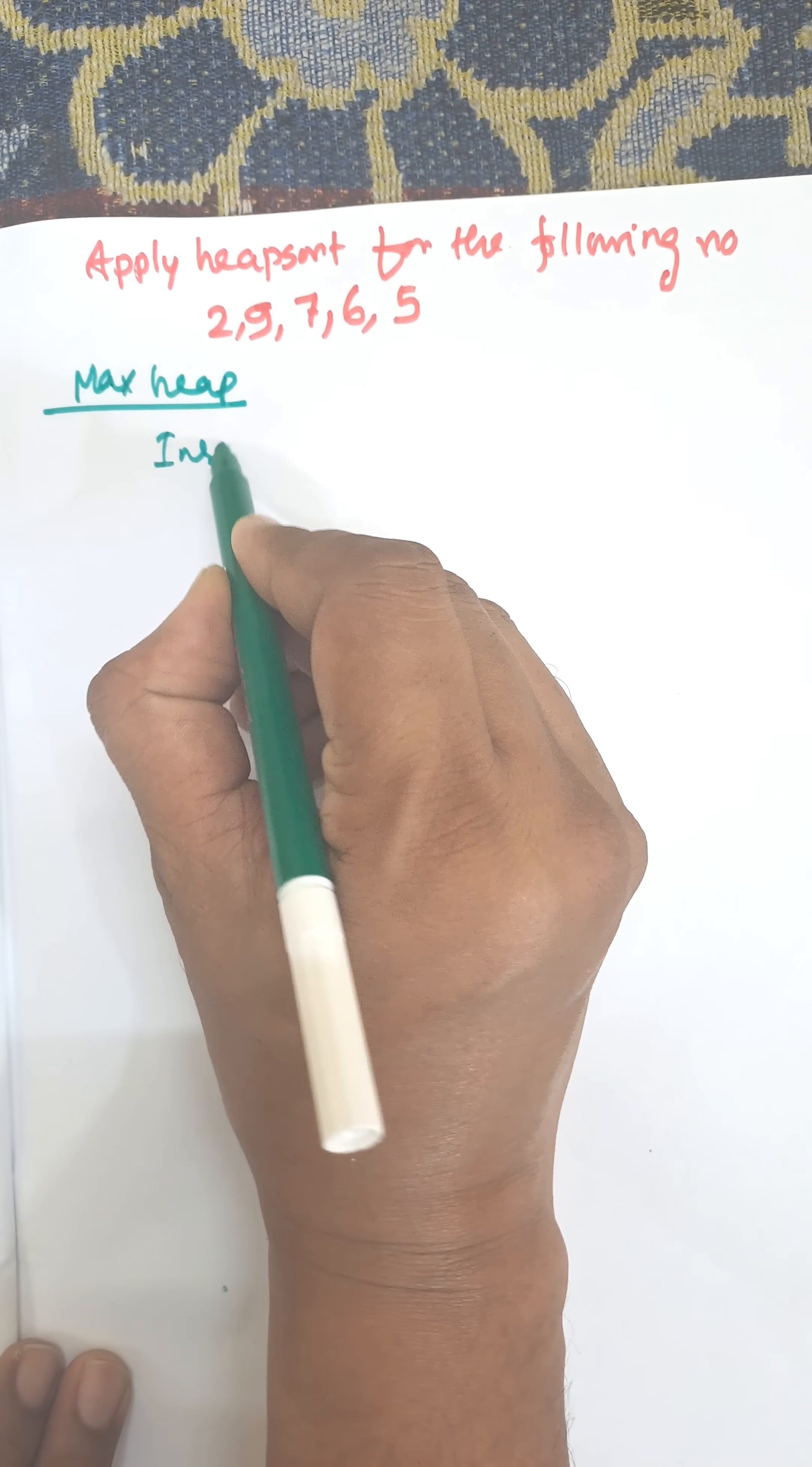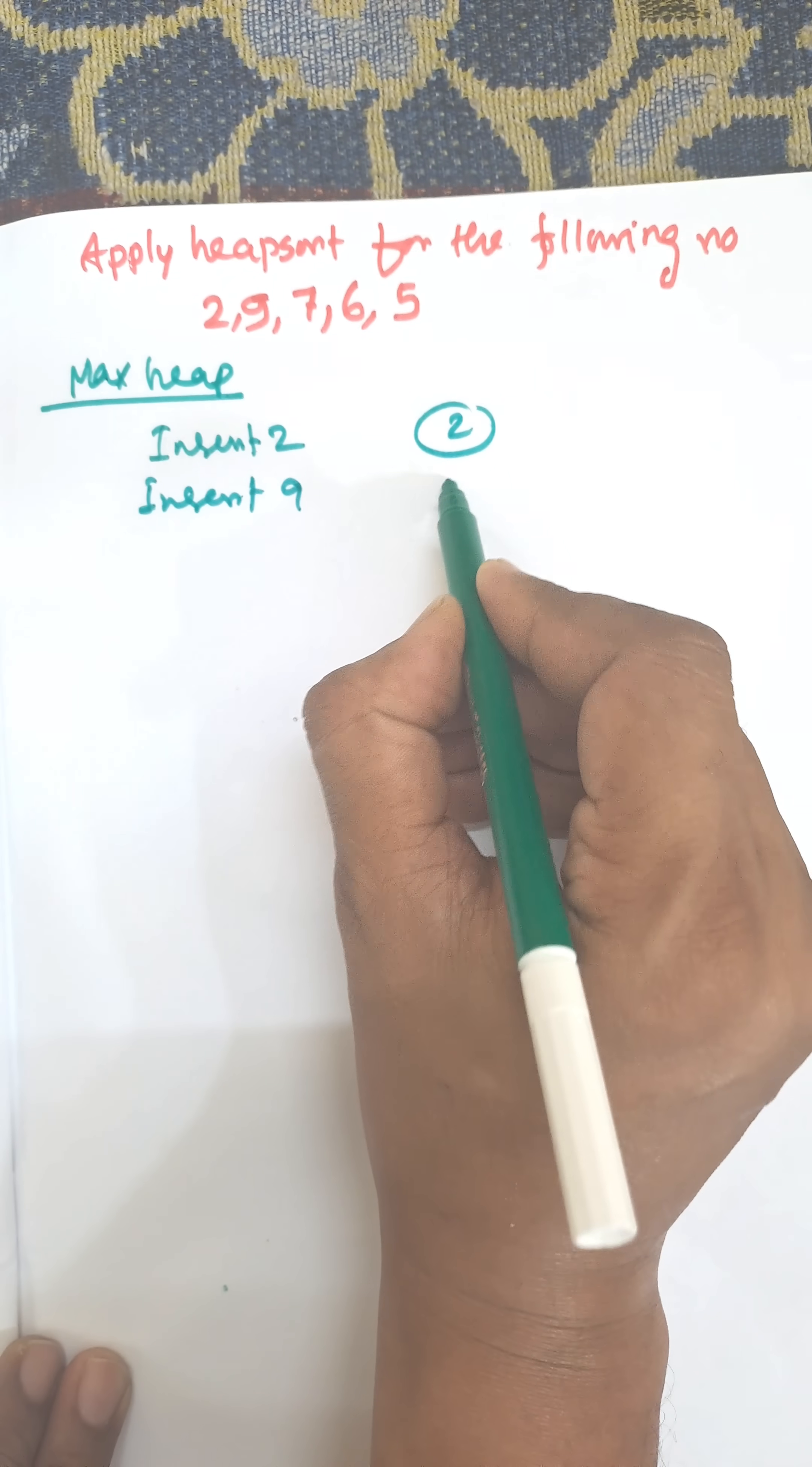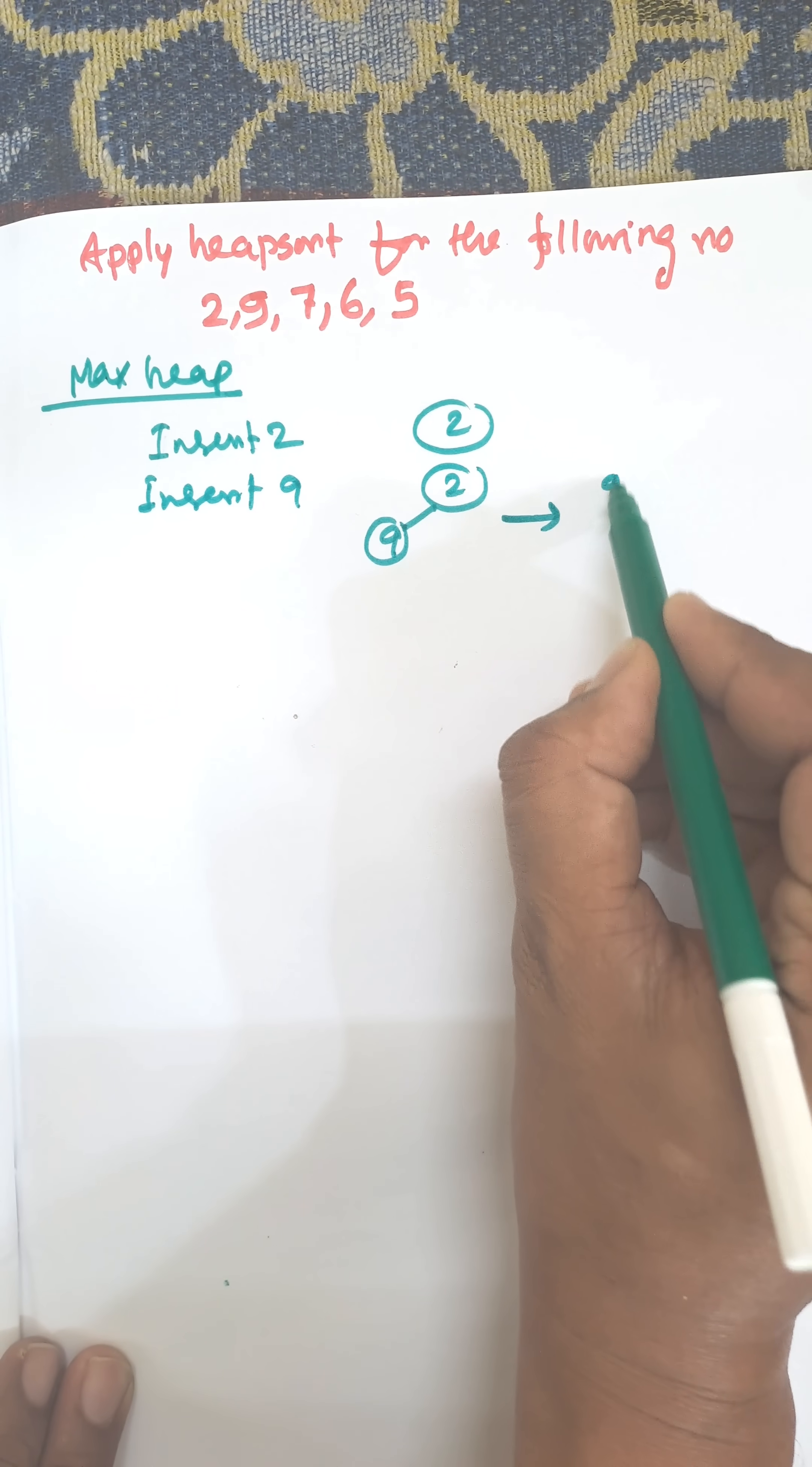Insert 2. 2 will be the root node. Now insert 9. 9 will be the next child of the 2 node. 9 is greater than 2, so they are swapped to each other. 9 and 2.